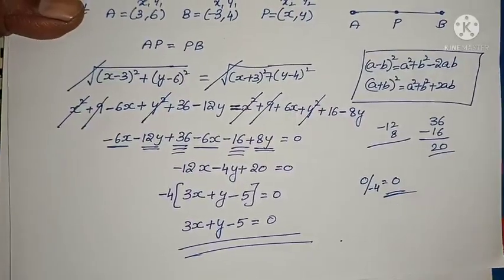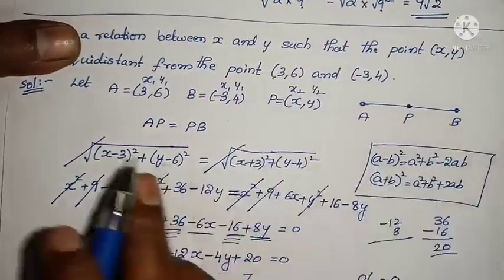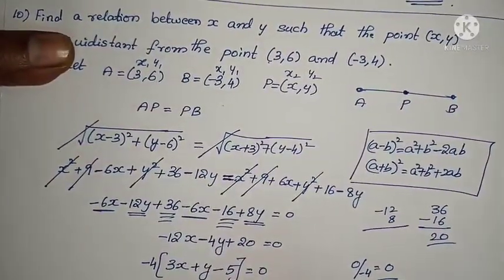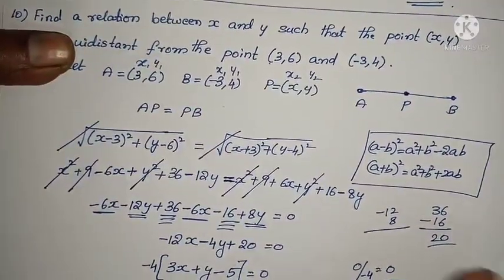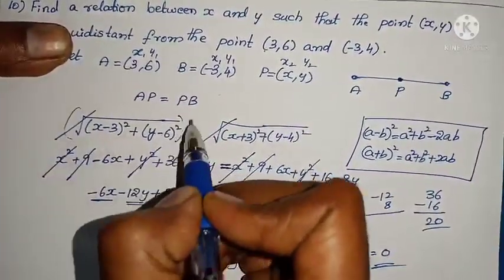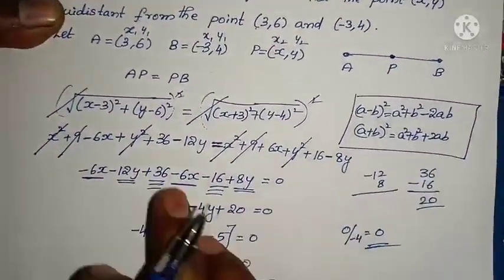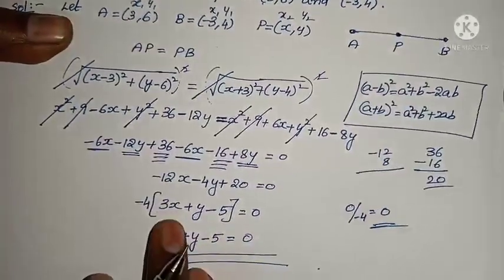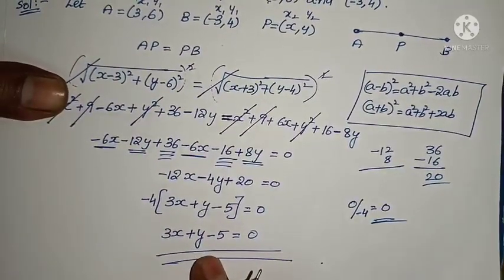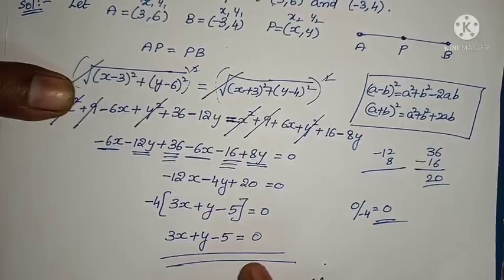That's all, our problem is over. By this exercise 7.1 is completed. How we have done: point P is equidistant from A and B, so I applied the distance formula. Squaring on both sides cancelled the roots. Using a minus b and a plus b whole square formulas and simplifying, then taking minus 4 as common, I got the equation 3x plus y minus 5 equals 0. Continuation we will see in the next video. If you like this video press the like button, share my channel and subscribe. Thank you.